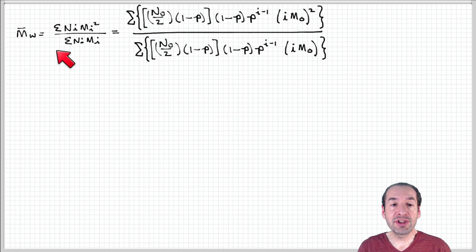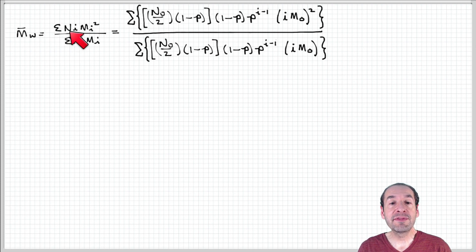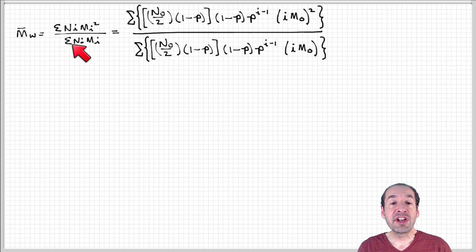We start with our equation for the weight average molecular weight in terms of these summations. In the numerator, we have a summation of the product of the number of i-mers times the molecular weight of an i-mer squared. In the denominator, we have the sum of the product of the number of i-mers times the molecular weight of an i-mer.